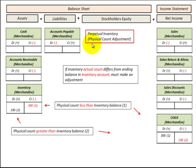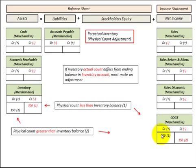At the end of the period, if the physical inventory count differs from the inventory account balance, we must make an adjustment. If the physical count is less than the book balance by $300, we credit inventory for $300 and debit cost of goods sold for $300. If the physical count is greater than the book balance by $150, we debit inventory for $150 and credit cost of goods sold by $150.